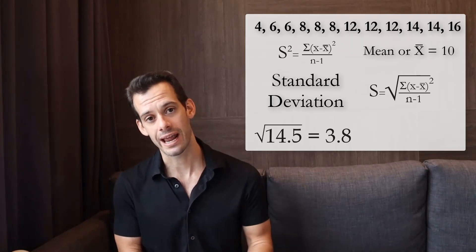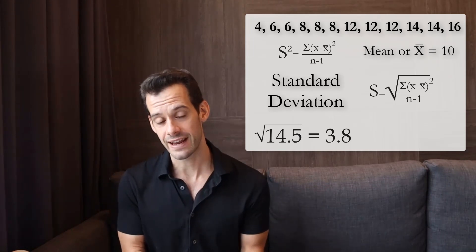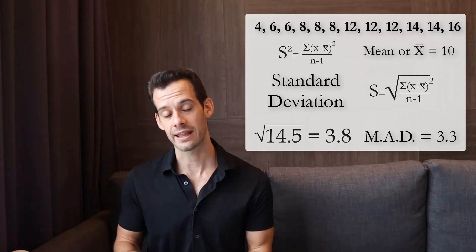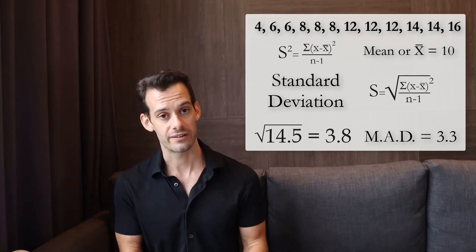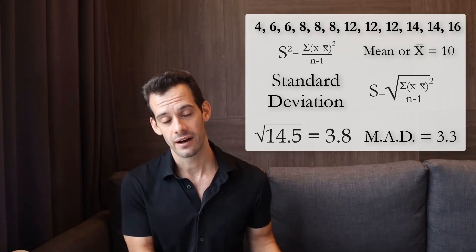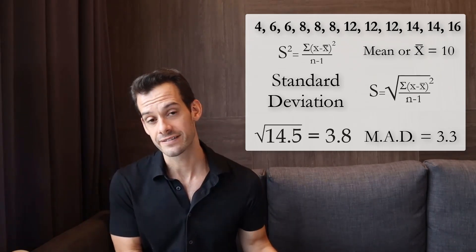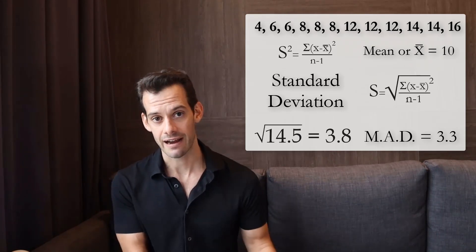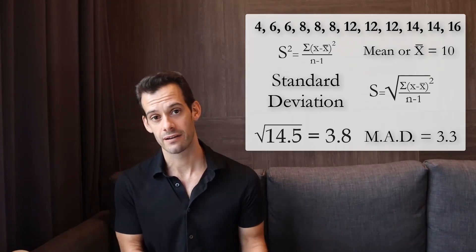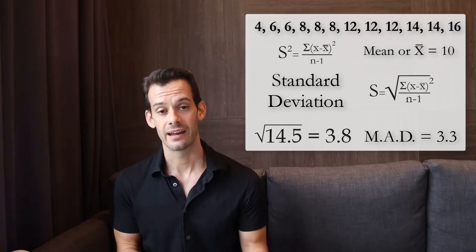We'll also notice that the standard deviation tends to be larger than the mean absolute deviation. This is because it's an estimate for the population, so it's assuming there's more variability than just in our sample, whereas the mean absolute deviation is specifically about our sample. The mean absolute deviation will tend to be about 80% of the size of the standard deviation — or another way to say it is that the standard deviation will be about 1.25 times the mean absolute deviation. It won't always be exactly that ratio; it varies depending on the distribution of your data, but that should give you a rough estimate of what to expect.